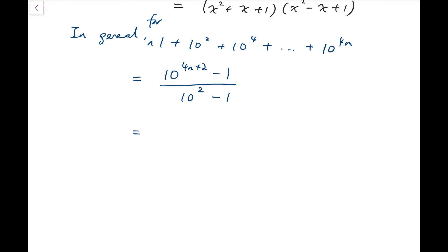Now from this, I can say that I can factorize both numerator and denominator by the identity of the difference of squares again, and say that it's actually 10 to the power of 2n plus 1 plus 1 or minus 1, and we multiply them together. And for the denominator, it will become 10 plus 1 times 10 minus 1.